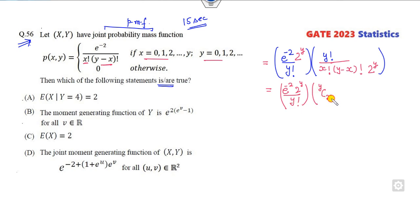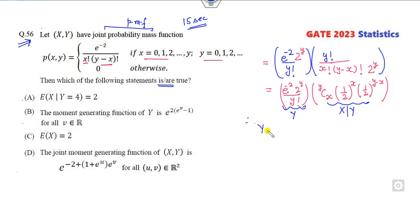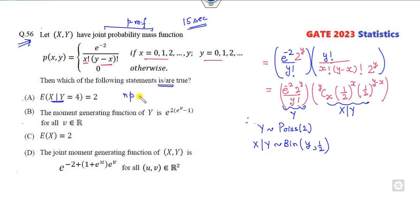I can rewrite this as yCx. Now for the binomial we need p raised to power x times q raised to power n minus x; if you expand it, it will again be 2 raised to power y. So this means: Y follows a Poisson distribution with mean parameter 2, and X given Y follows a Binomial distribution with n equal to Y and probability equal to one-half. So the expected value of X given Y equals n times p, which is Y times one-half. With Y equal to 4, the answer is 2.